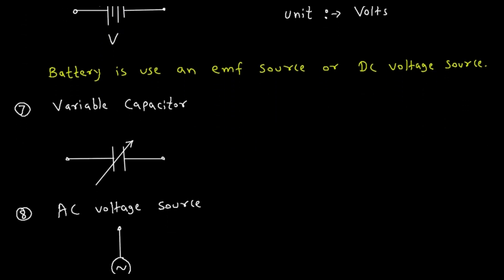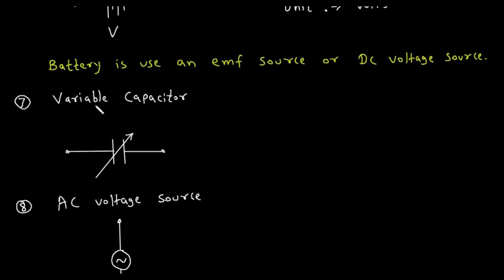Then next is variable capacitor. Similar to variable resistor, this is the symbol for variable capacitor. We just have to add an arrow on the symbol of capacitor, then it will be a variable capacitor. Here we can vary the value of capacitance.